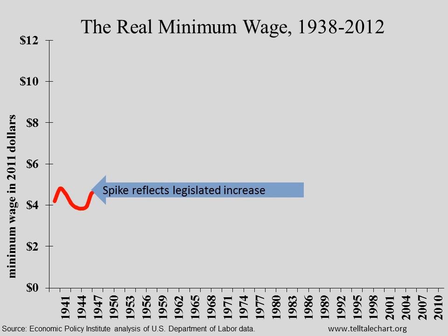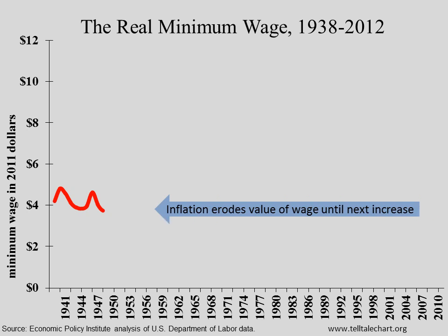The spikes on the graph represent legislated increases in the federal minimum. After each increase, the line dips, as the real value of the minimum is eroded by inflation. The price of goods and services increases, but the wage remains stagnant.